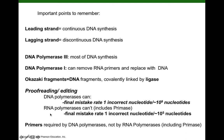In contrast, RNA polymerases can't proofread or edit. That means their final mistake rate is the initial mistake rate. The initial mistake rate for both DNA polymerase and RNA polymerase is one incorrect nucleotide in every 10^4 to 10^5 nucleotides.